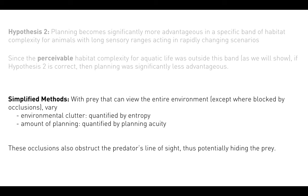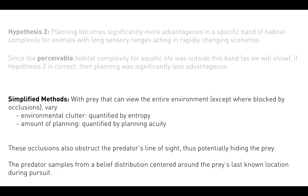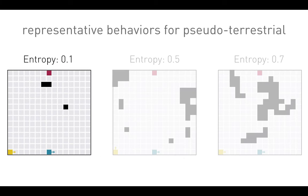The occlusions also obstruct the predator's line of sight, potentially hiding the prey. The predator samples from a belief distribution centered around the prey's last known location during pursuit. Here are a few representative trials from a dataset where we generate 20 randomly generated worlds at each entropy level from 0.1 to 0.9, with 20 random worlds and five different predator originating locations each. Does the prey understand the visual available ranges of the predator? It knows that as soon as it's out in the open, the predator can see it, and it knows that occlusions can block vision.